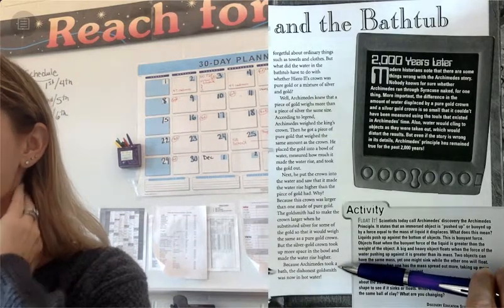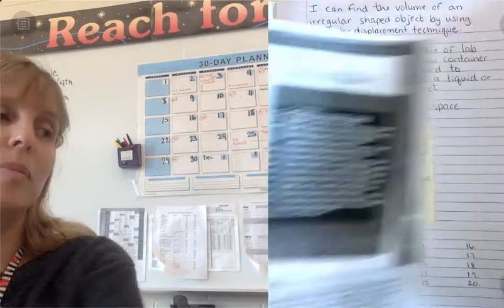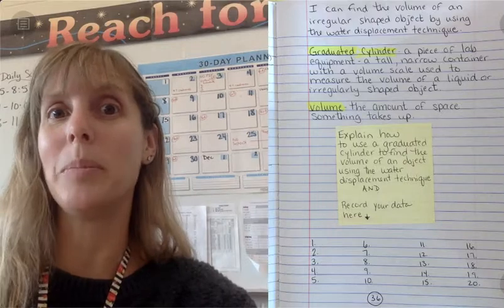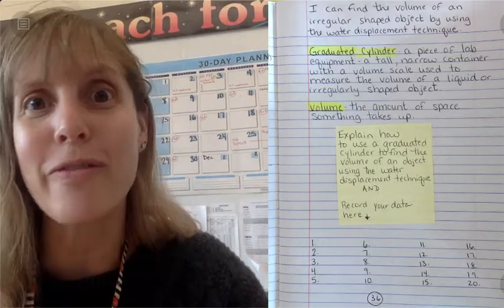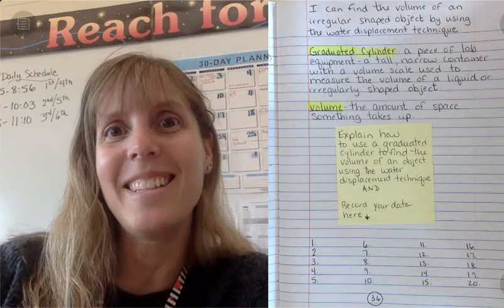But the silver gold crown took up more space in the bowl and made the water rise higher. Because Archimedes took a bath, the dishonest goldsmith was now in hot water. Because of course, he didn't pay attention to the volume of silver and the volume of gold, because it's different, because they are different substances with different volumes and different densities.